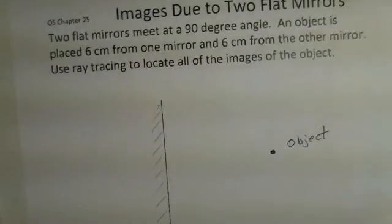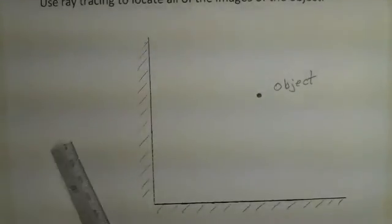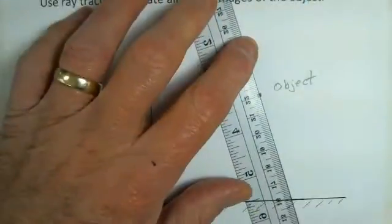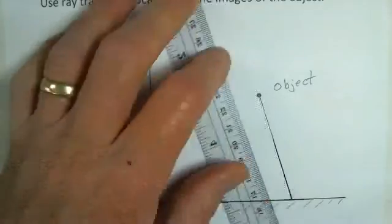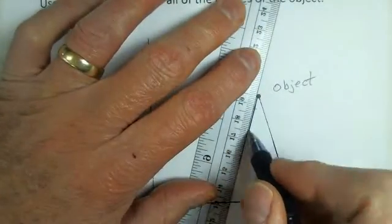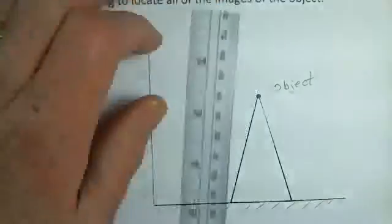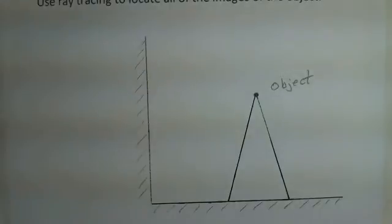Let's see if we can locate the images for this particular object. So I'm going to start by drawing two rays leaving this object. There are many, many rays you could draw. I'm going to draw this one, and I'm going to draw this one. So how do they bounce off of the mirror? We know they're going to obey the law of reflection.